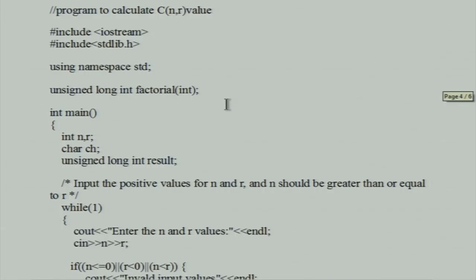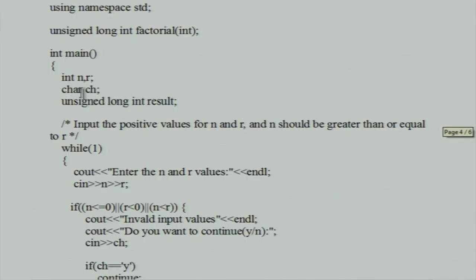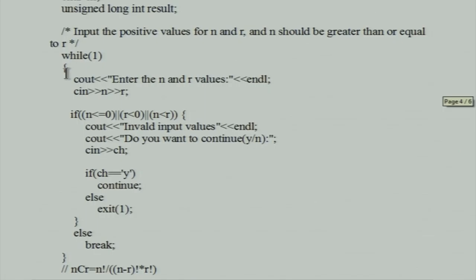In the main function, we declare N, R, CH, and result (unsigned long int). A while(1) infinite loop reads N and R values using cin, then uses an if statement to check three conditions: N <= 0, R < 0, or N < R. If any condition is true, it prints 'invalid input values' and asks if you want to continue — yes or no. If 'y', the next iteration starts. Otherwise, exit(1) terminates the program.